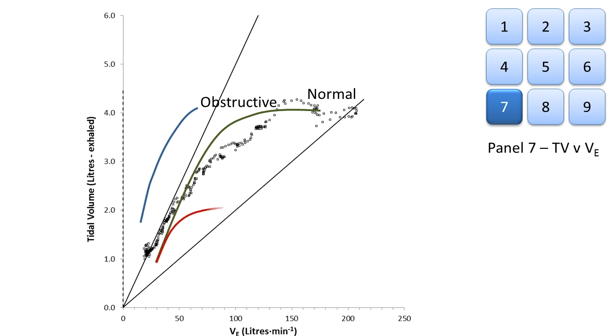On the other side of the scale, restrictive patients will show little or no increase in tidal volume and a very early shift to increased breathing frequency, and probably exceed the expected breathing frequency of 50 breaths a minute.